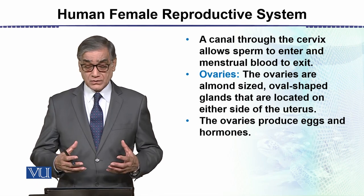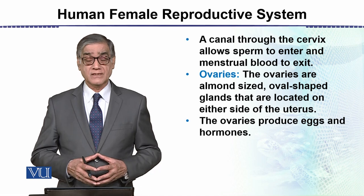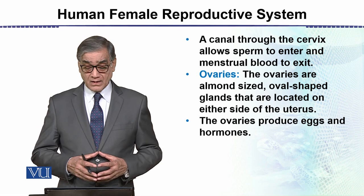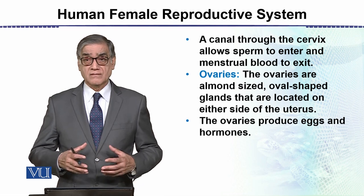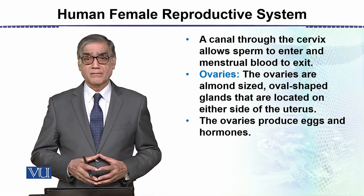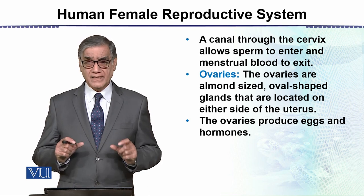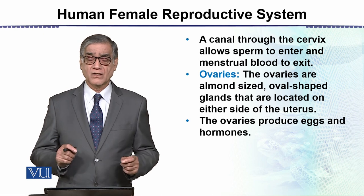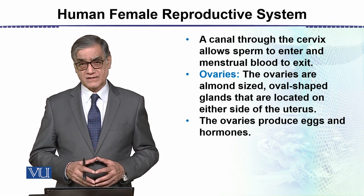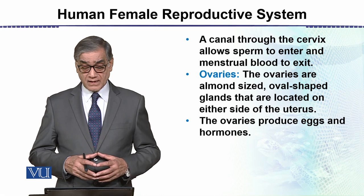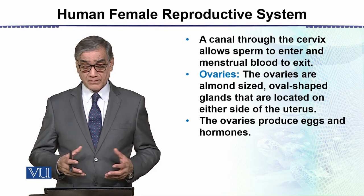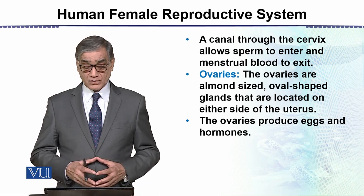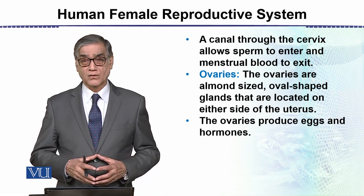Through the cervix, sperms are allowed to enter and menstrual blood is allowed to exit. The ovaries are oval-shaped glands located on either side of the uterus. As we noted in the diagram, they are almond-sized, oval-shaped structures, one on each side of the uterus. The ovaries produce eggs and hormones.